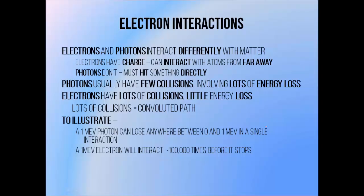We've covered photon interaction already, but the way that electrons interact with matter is quite different. This is primarily because electrons have a charge, which allows them to interact with other charged objects from a considerable distance away, when compared with a photon which has no charge and must more or less hit something directly in order to interact with it. The net effect is that photons interact relatively rarely with matter, but when they do they tend to interact violently and transfer a lot of their energy. Electrons interact far more often, and usually transfer a lot less of their energy in a single collision. As a result of all these collisions, they tend to follow a fairly convoluted path through matter, being deflected over and over again.